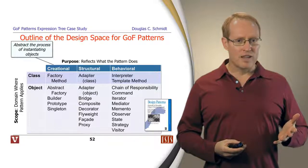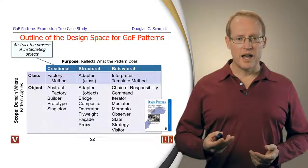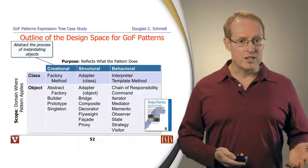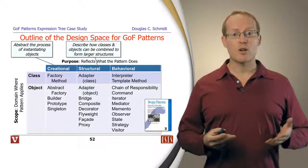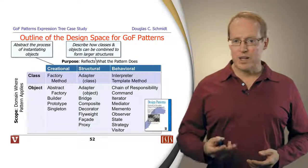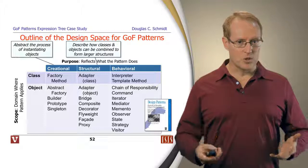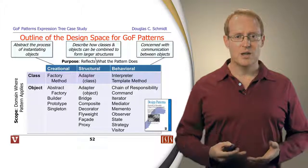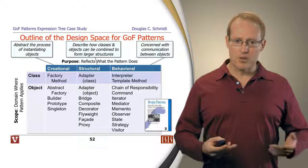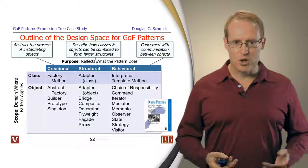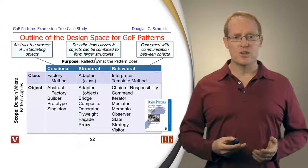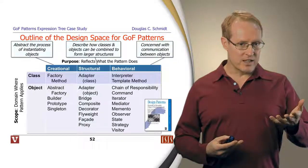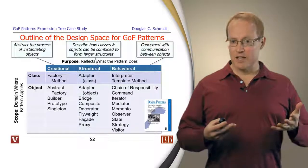There's a couple different ways to categorize the Gang of Four patterns. One is by purpose. We have creational patterns that abstract the process of instantiating objects, structural patterns which describe how classes and objects can be combined to form larger structures, and behavioral patterns which are concerned with communication between objects. There's also another dimension called scope, which explains the domain where the patterns apply. Do they apply primarily to classes? Do they apply primarily to objects and so on?